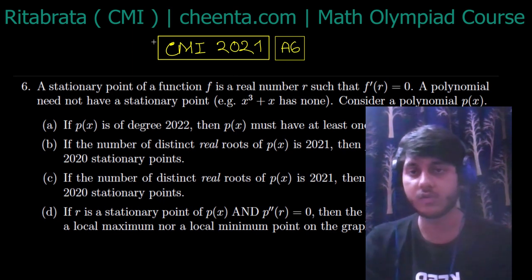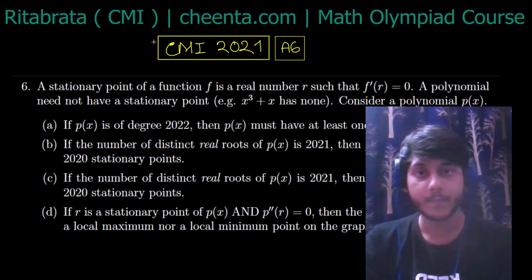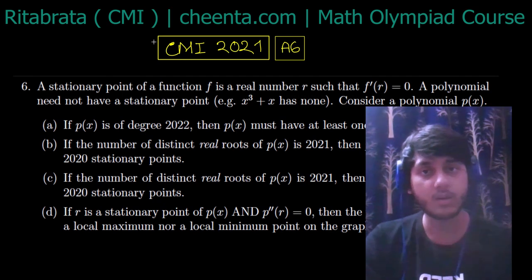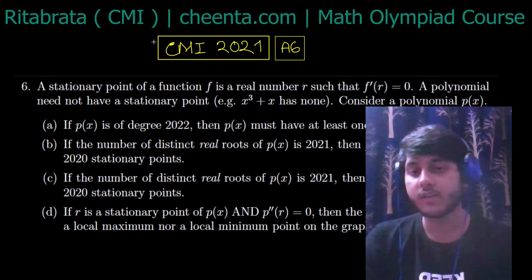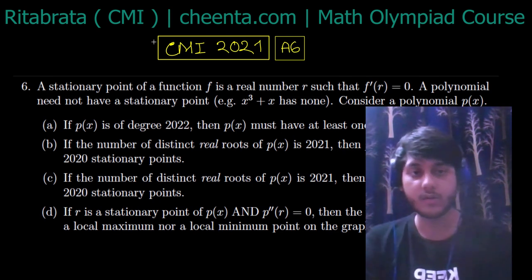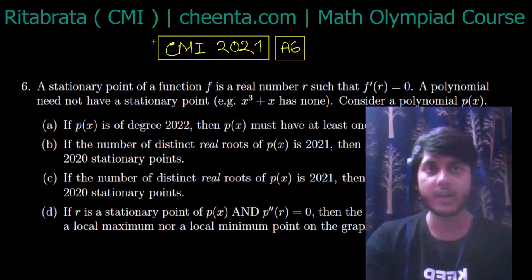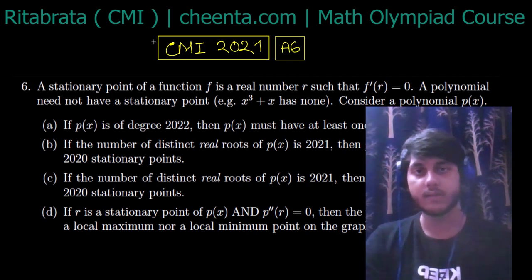In this case, we have determined that when P of X is a polynomial of degree 2020, then P of X has at least one stationary point. If a stationary point exists, then P of X is at least at a stationary point — the local maximum is a case we have discussed.